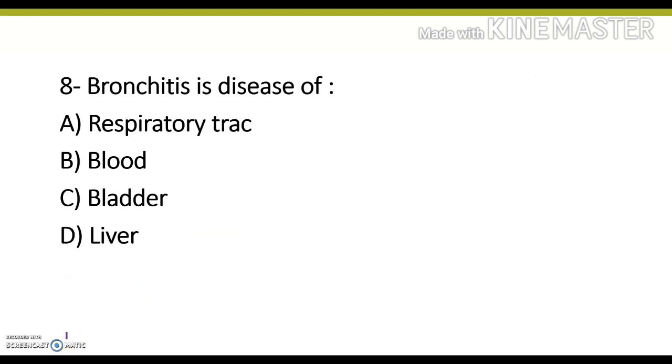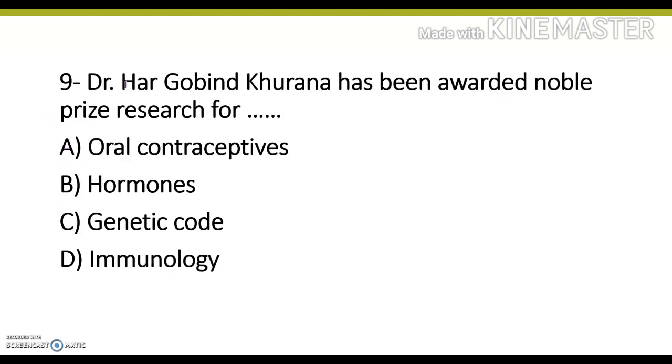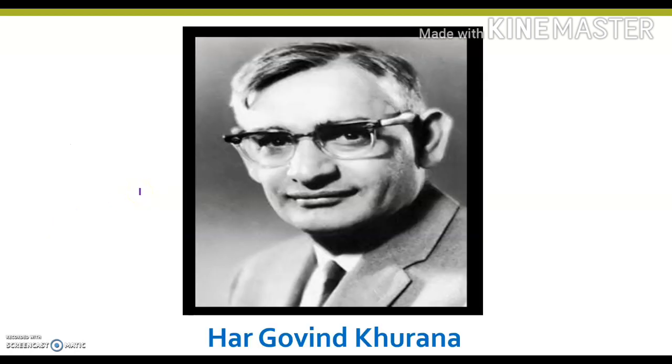Bronchitis is a disease of respiratory tract, blood, bladder, or liver. Its correct answer is option A, respiratory tract. Next question: Dr. Hargovind Khurana has been awarded Nobel Prize for research in oral contraceptives, hormones, genetic code, or immunology. Its correct answer is option C, genetic code. He got the Nobel Prize in 1968 in Physiology or Medicine.